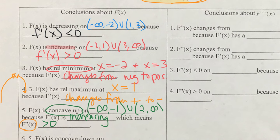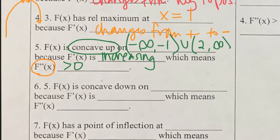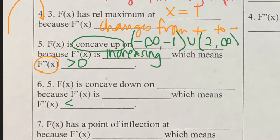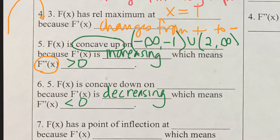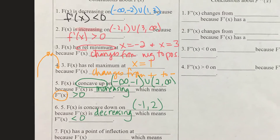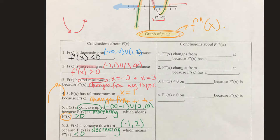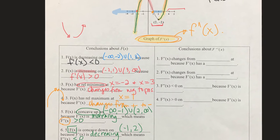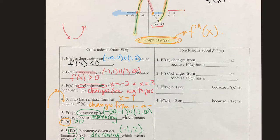Now for concave down: concave down means the second derivative is less than zero. When f double prime is less than zero, f prime is decreasing. That happens in the middle — from negative 1 to 2 is the interval where f is concave down. So f being concave down happens when the second derivative is negative, and f double prime is negative where the first derivative graph is decreasing.